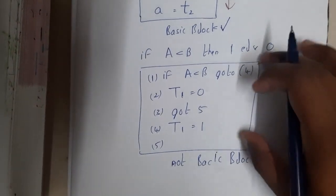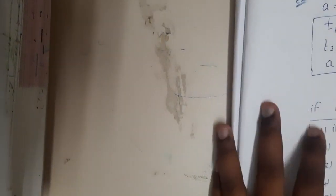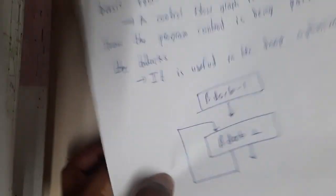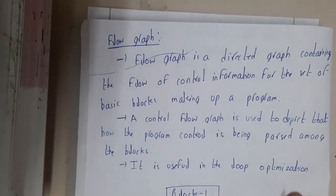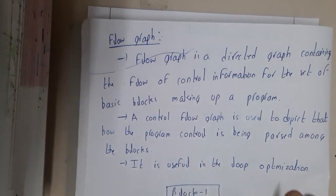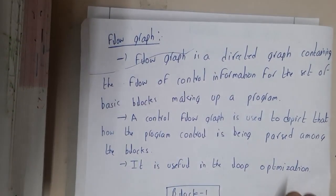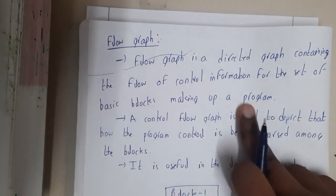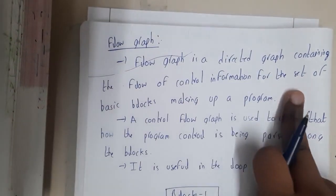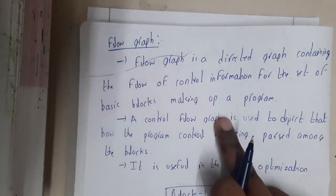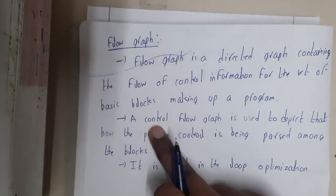Similarly, flow graphs. Flow graphs are nothing but the blocks - how they are going to execute, that order is nothing but the flow graph. Flow graph is a directed graph containing the flow for controlling information of the set of blocks making up a program.